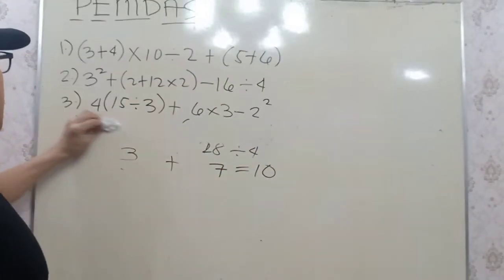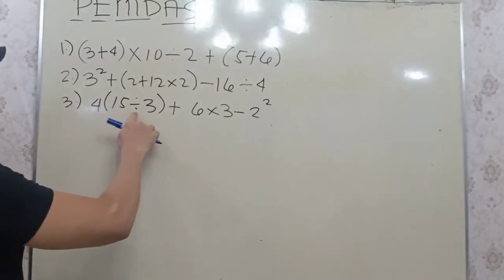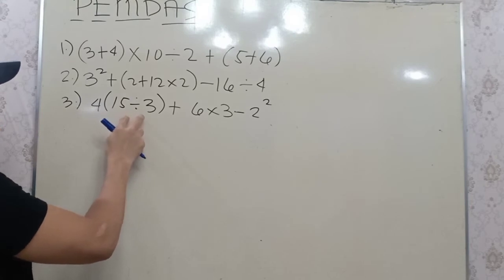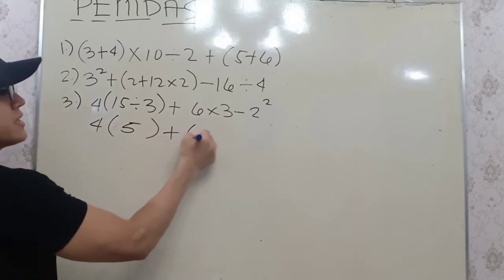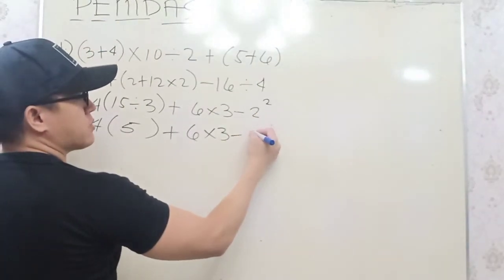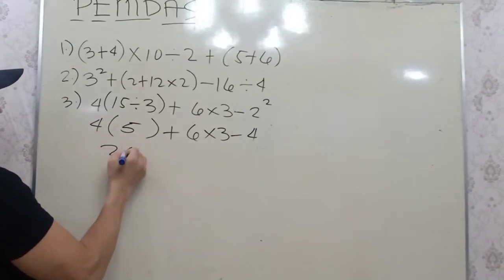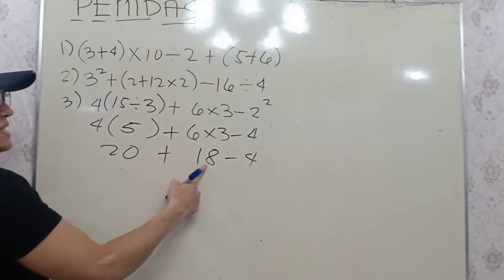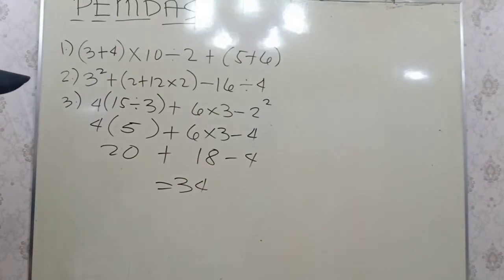Next, number 3: we have 4 times 15 divided by 3 plus 6 times 3 minus 2 squared. Do we have parentheses? Yes, so we perform that first. 4 times 15 divided by 3 gives 5, plus 6 times 3 minus 2 squared. Exponent first: 2 squared is 4. Then multiplication: this becomes 20 and this becomes 18. So 20 plus 18 is 38 minus 4, which equals 34.